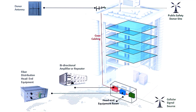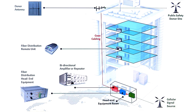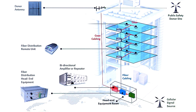The head end equipment, or DAS interface, will then convert that radio frequency signal into light to be distributed out through fiber optic cabling to each of the remote locations. A typical installation will show remote locations on each floor. Each remote location, or remote hub, will convert the light from the fiber optic cable back into radio frequency, add amplification to that, and then distribute it out through coaxial cable to the indoor antennas.